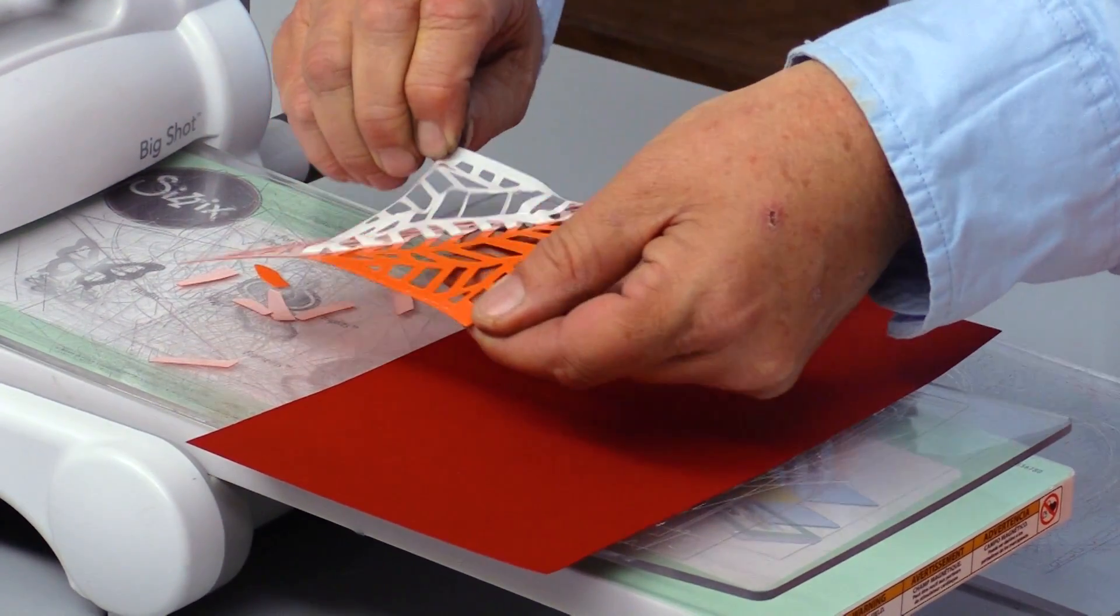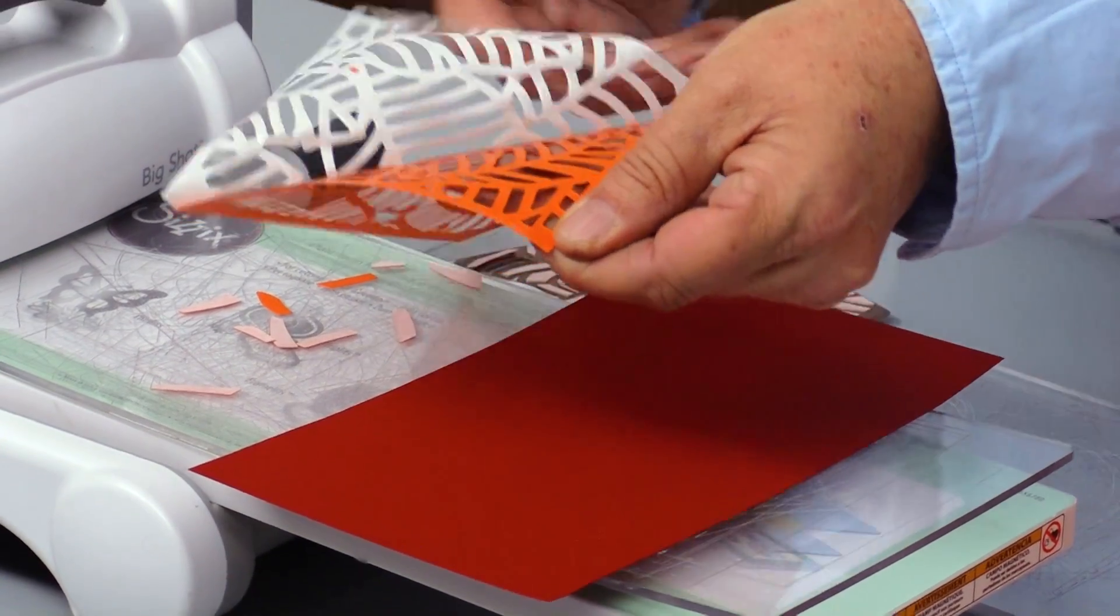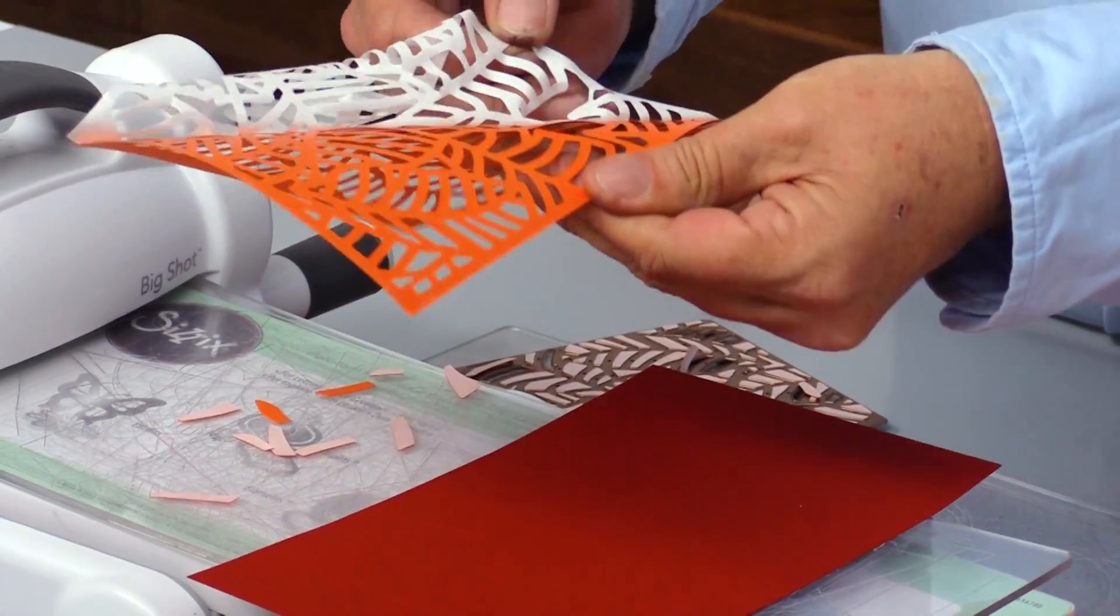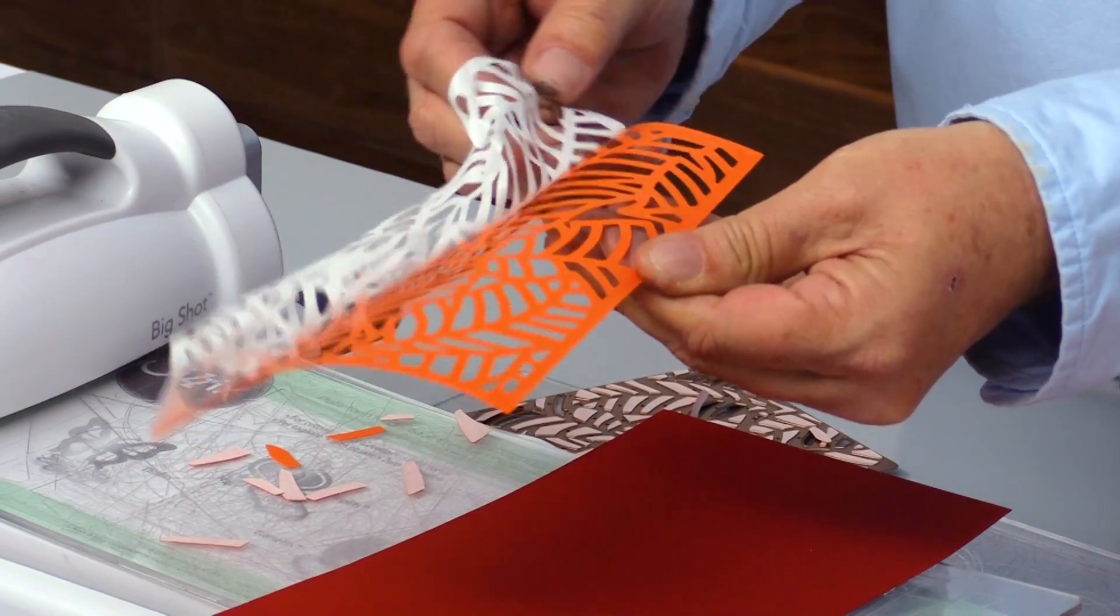Simply peel the back side of that release liner off and every single bit of that intricate die cut has adhesive on it.